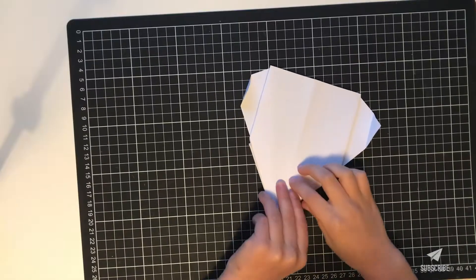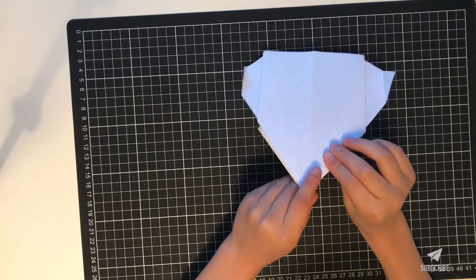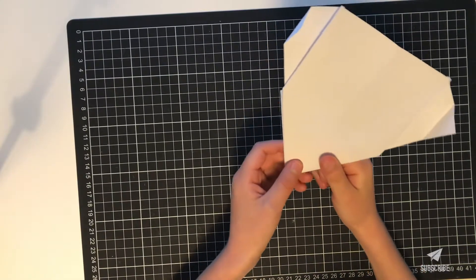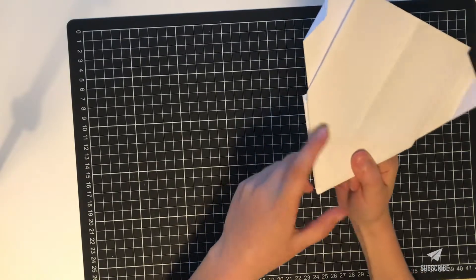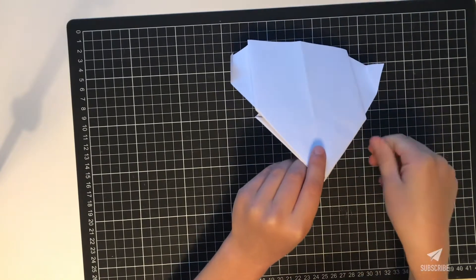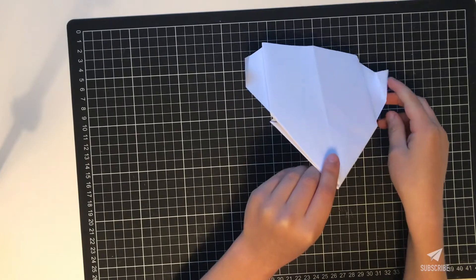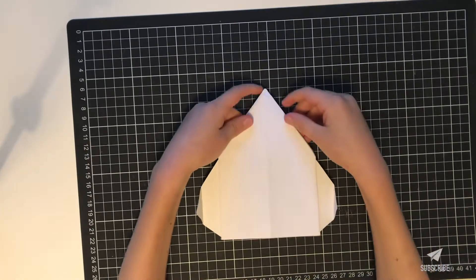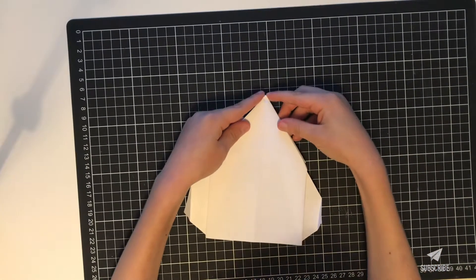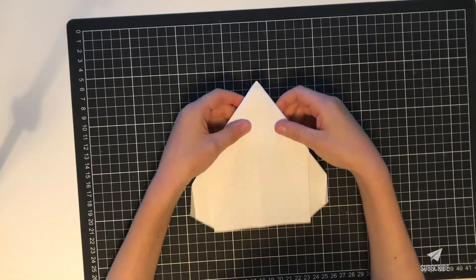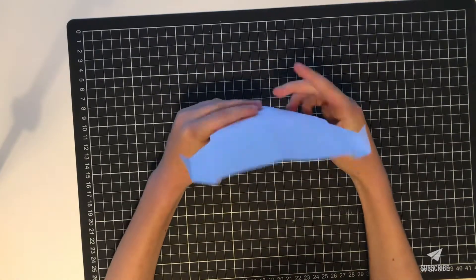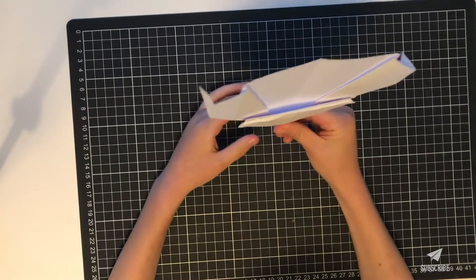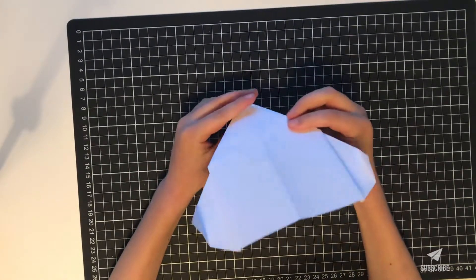Today we're going to make this really cool plane. I call this the flying card. The original name is the wind walker. It's just flat, which is why it's like a cool card.